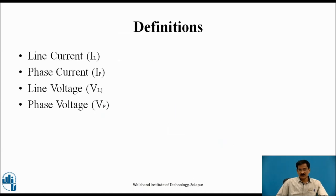Definitions: Phase current is the current flowing through a particular phase, whereas line current is the current flowing through a particular line. Phase voltage is the voltage across a particular phase, whereas line voltage is the voltage between two lines — for example, VRY is the line voltage between R and Y phase, VYB is the voltage between Y and B phase, and VBR is the line voltage between B and R. In delta connection you will find only three wires (R, Y, B), whereas in star connection it is a four-wire system.